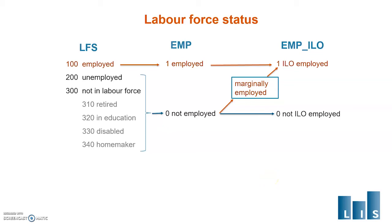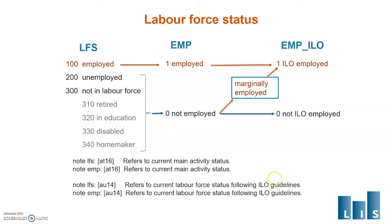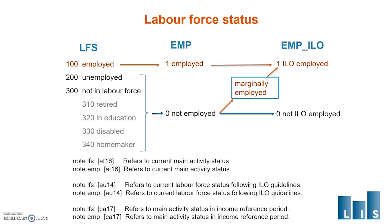When we have the ideal content of current main activity in the original database, you will see a note for LFS and AMP, like this one from Austria. However, we don't always have the ideal content in the original data — therefore if the question 'did you work at least one hour last week' was the first filter in the questionnaire and only those who were not ILO employed were asked why they did not work, you will see a note like this one from Australia. We might also have only the activity status in the income reference period, and then you will see a note like this one from Canada.